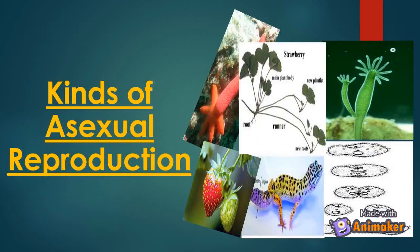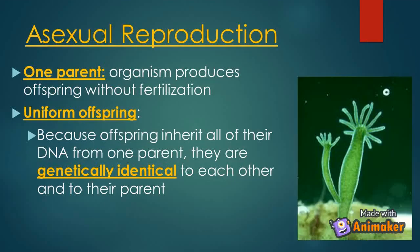Kinds of asexual reproduction. Asexual reproduction requires only one parent that produces offspring without fertilization. They are uniform offspring because the offspring inherit all of their DNA from one parent. They are genetically identical to each other and to their parent.